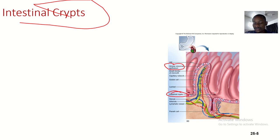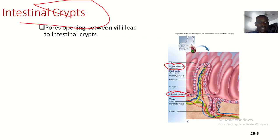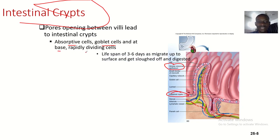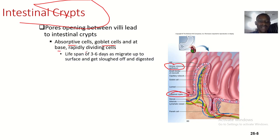There is a pause opening between the villi leading towards the intestinal crypt. Cells here can become absorptive cells or goblet cells. At the base are rapidly dividing cells with a lifespan of about six days, as they migrate up to the surface and get sloughed off and digested.